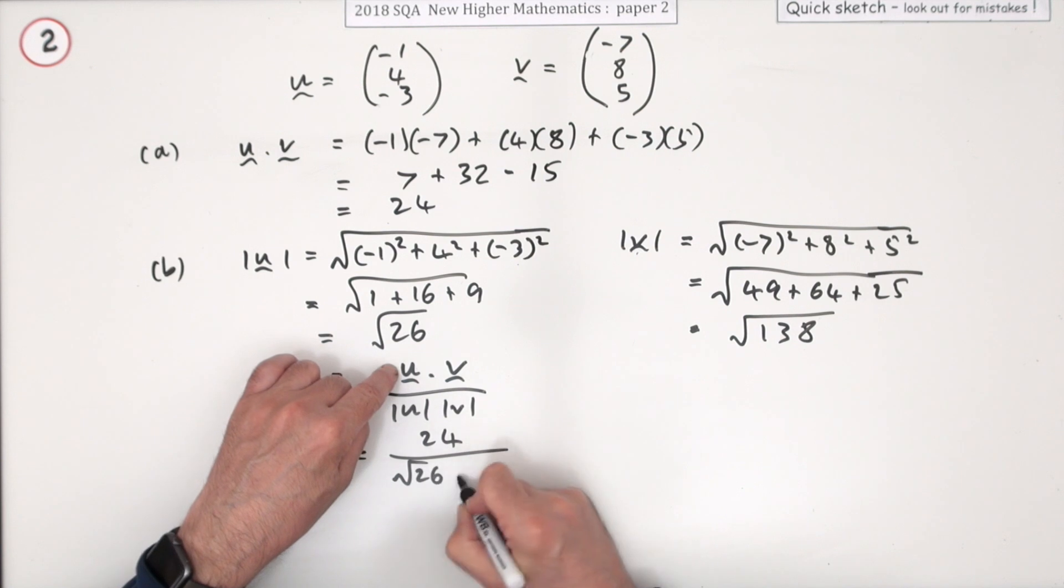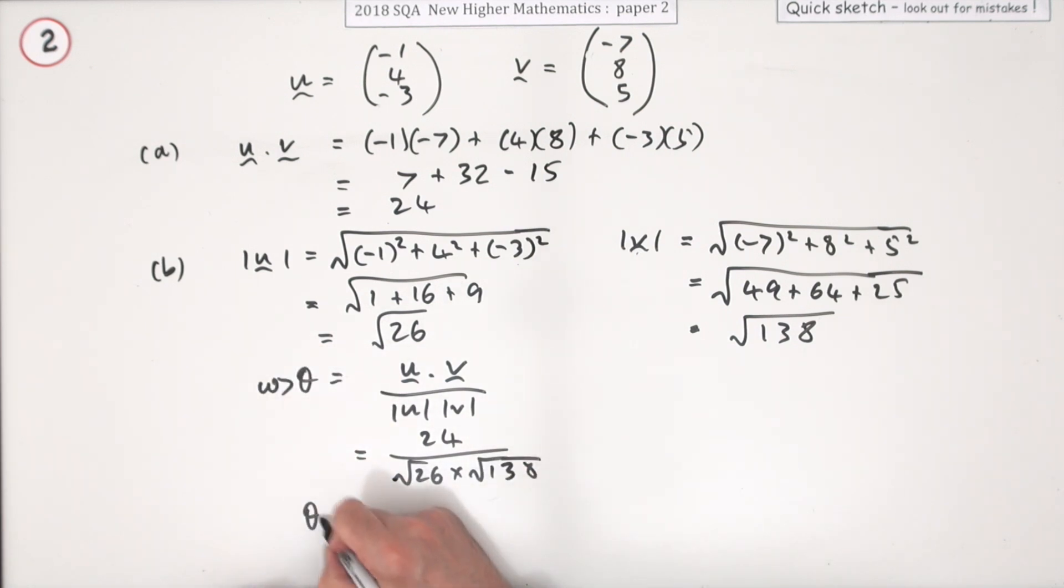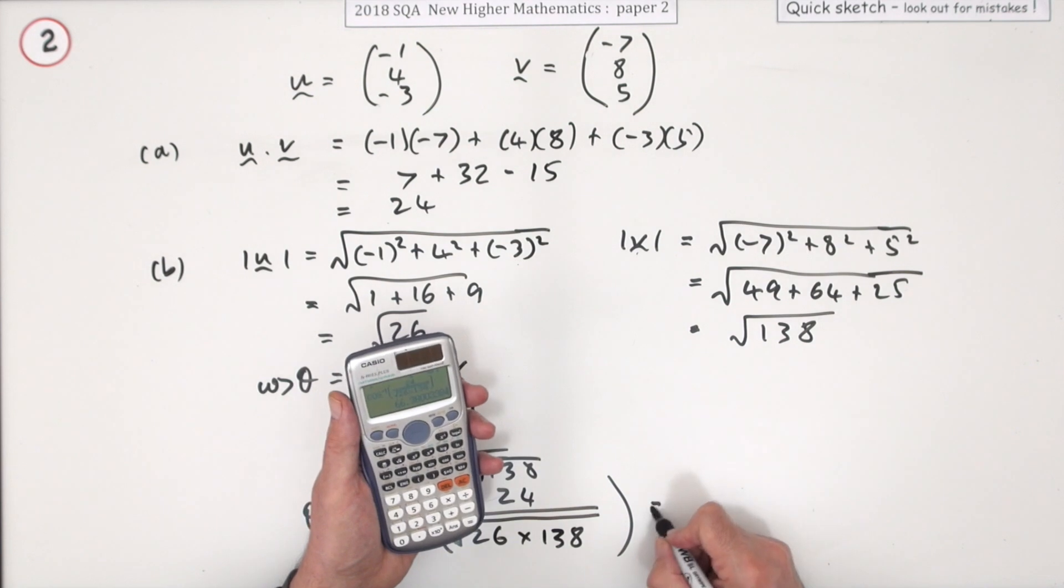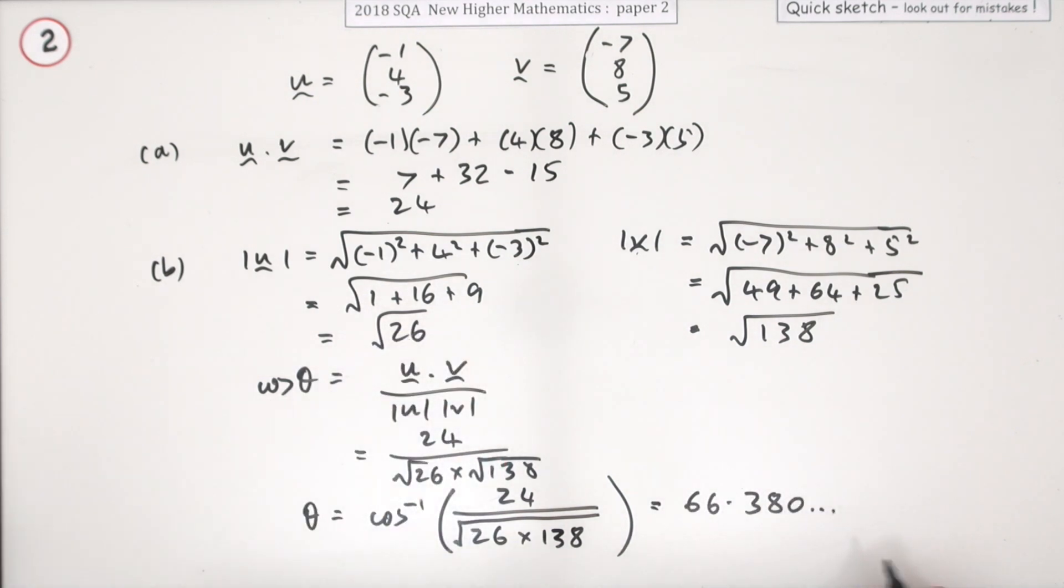Finally, the angle will be the inverse cosine. There's no need to put that out of that thing. And of course, the product of roots is the root of the product, so the square root of 26 times 138 saves you accidentally putting a square root inside of a square root when you put it into your calculator. When you do that and press the button, you get 66.380 and so on, so I'll just say angle equals 66.4 degrees.